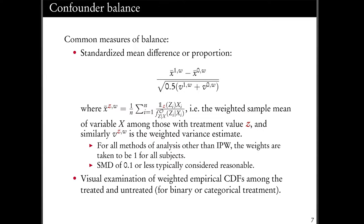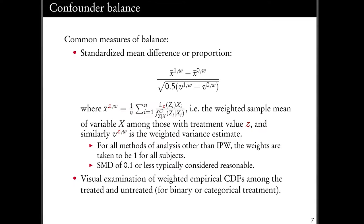A common measure of balance is the standardized mean difference or proportion. It's effectively like a Wald statistic or t-test type statistic where we look at the difference in means divided by a pooled variance. There are unpooled and slightly different versions, but they all come down to the same idea: when standardizing by variability, do we have a big difference in our treated and untreated groups? We can look at this in both weighted and unweighted samples. Another way to assess balance for continuous confounders is to look at empirical CDFs to see whether they lie on one another.